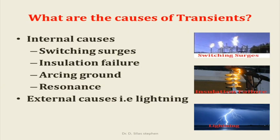What are the causes of transients? The internal causes are switching surges, insulation failure, arcing ground, and resonance. The external cause is lightning.